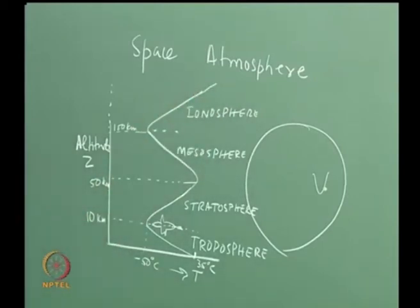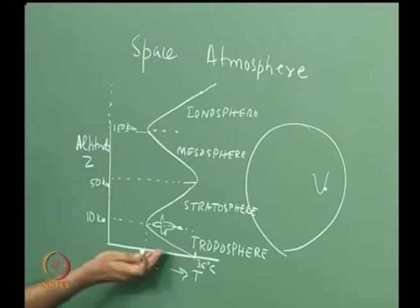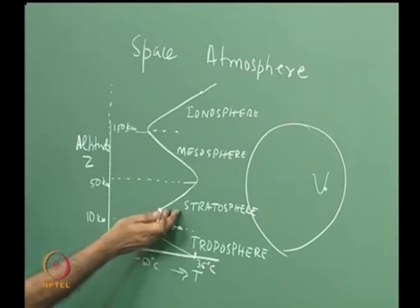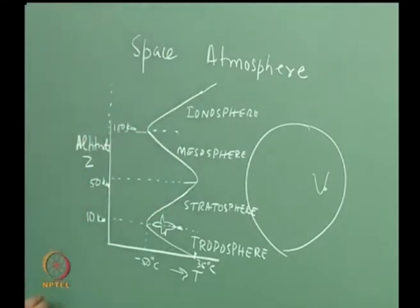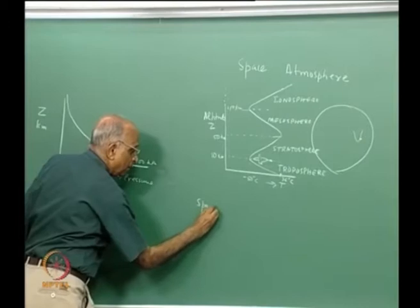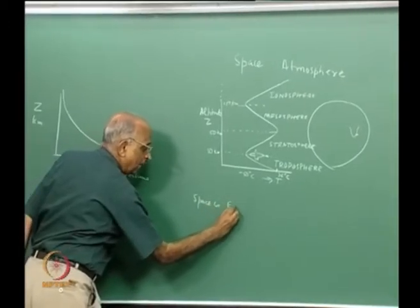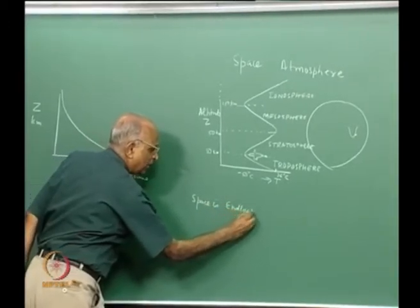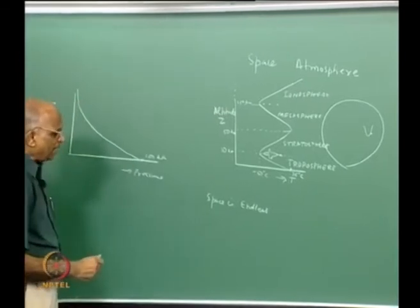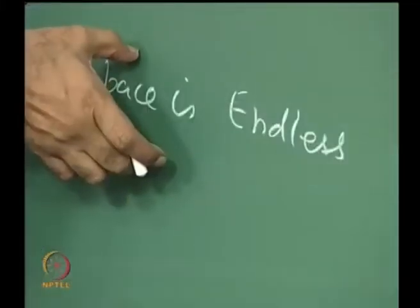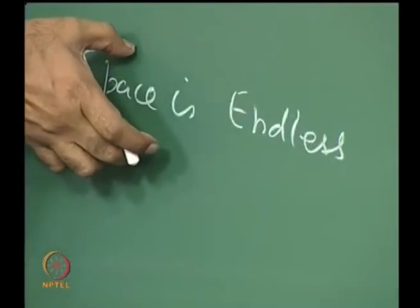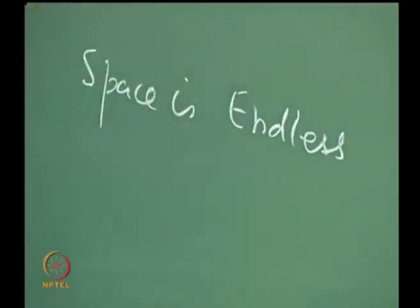What do we define as space? Anything above the surface going through the troposphere, stratosphere, mesosphere, ionosphere, and beyond — space is endless, going to infinity. We must be capable of defining what constitutes space. There is no fixed extent, so it is necessary to look at what is actually in space.